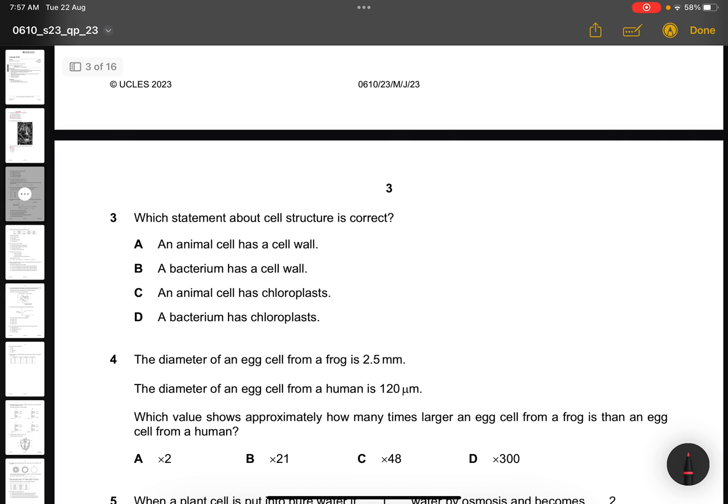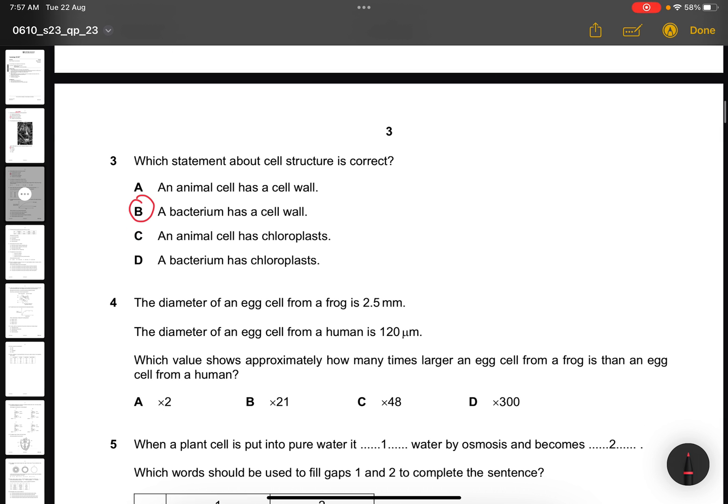Question 3. Which statement about cell structure is correct? A bacterium has a cell wall. That's correct, because an animal cell doesn't have a cell wall, they only have a cell membrane. An animal cell has no chloroplast. A bacterium also has no chloroplast.